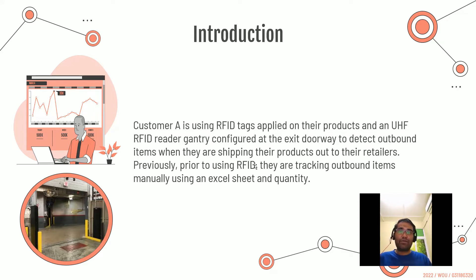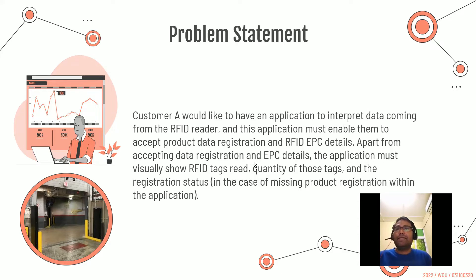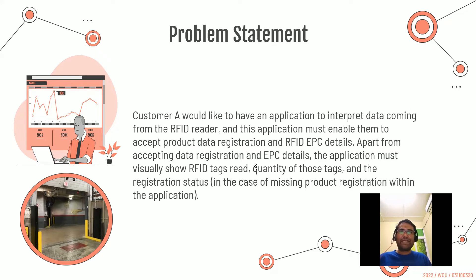Previously, prior to using RFID, they were tracking outbound items manually using an Excel sheet, noting down the quantity as items moved out. The picture in the rounded icon on the left side of the slide is an actual RFID gantry built for this customer. The problem statement is that customer A would like an application to interpret data from the RFID reader that must enable them to accept product data registration and RFID EPC details, visually show RFID tag reads, quantity of tags, and registration status in the case of missing product registration.